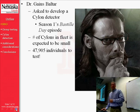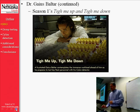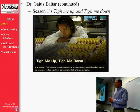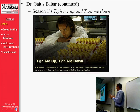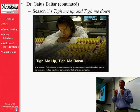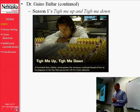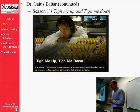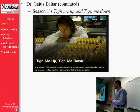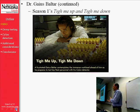A few episodes after Baltar is asked to develop a Cylon detector, he does develop one. In Season 1's 'Tie Me Up and Tie Me Down,' you see Baltar in his laboratory surrounded by many, many different blood specimens. Each of these blood specimens is used by the Cylon detector to determine human or Cylon. The caption reads: 'A frustrated Gaius Baltar contemplates the immense workload ahead of him as he prepares to test key fleet personnel with his Cylon detector.'